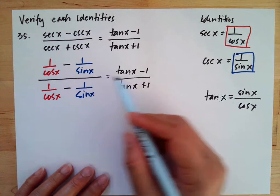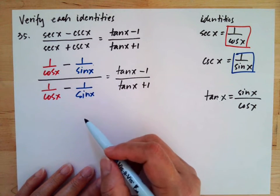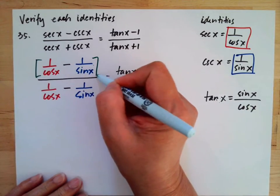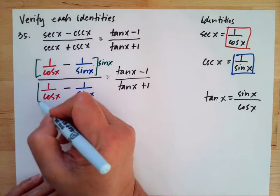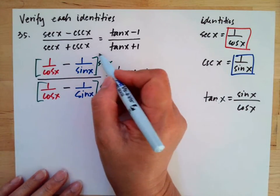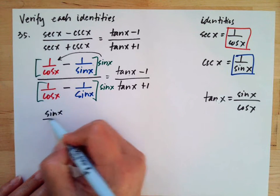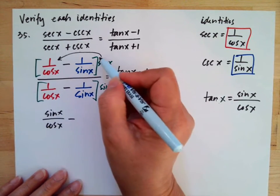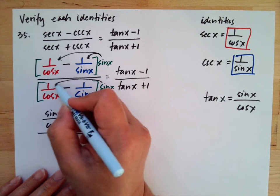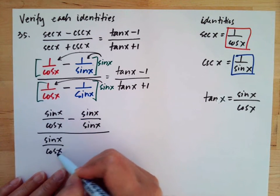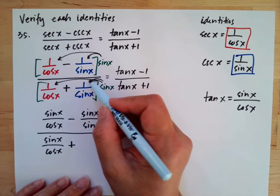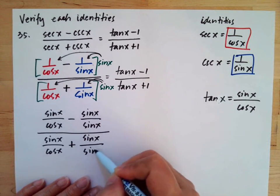So we multiply both the numerator and the denominator by sine x, and distribute. The numerator becomes: sine x over cosine x minus sine x over sine x. The denominator becomes: sine x over cosine x plus sine x over sine x.